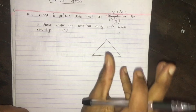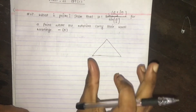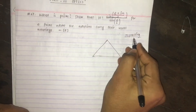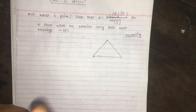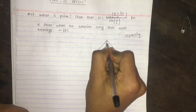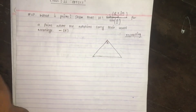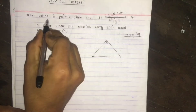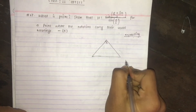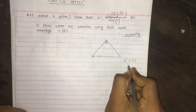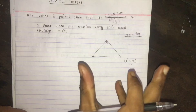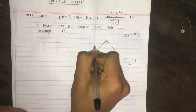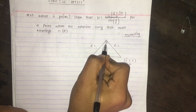A prism is a refracting medium with two refracting surfaces and a base. The angle between the two refracting surfaces is called the angle of prism.